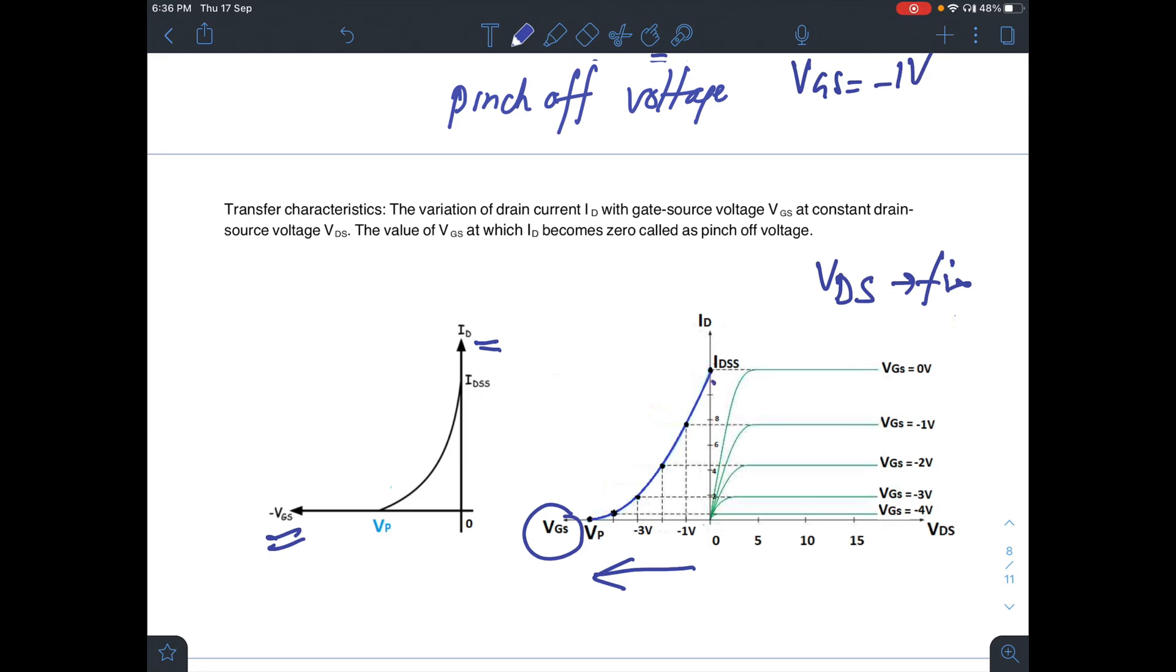The current will decrease as you increase VGS, and the value of VGS at which current ID is 0 will be your pinch-off voltage. You can calculate the value of IDSS as well as VP from the transfer characteristics also.